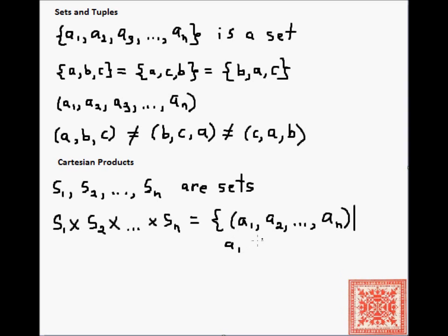The n-tuples are a1, a2, through an, where the first element comes from the first set, the second element comes from the second set, and the third element from the third set. The nth element comes from the set number n.